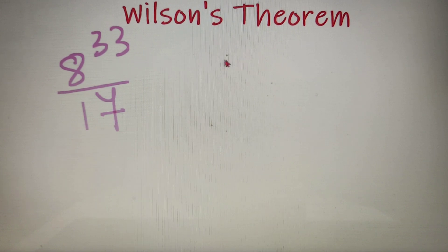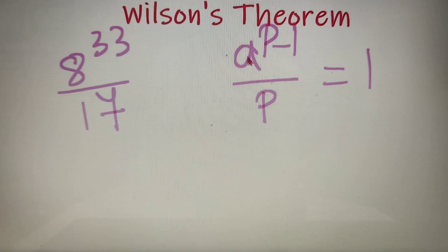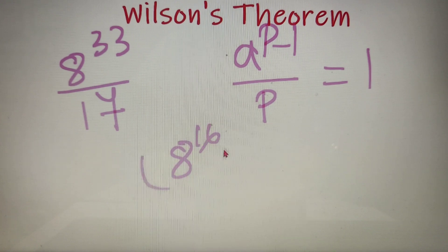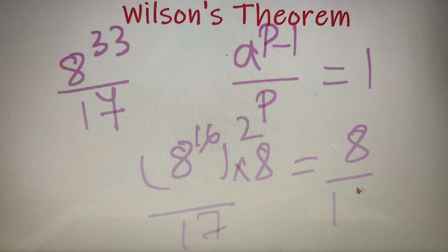We apply Fermat's Little Theorem, which states that when a to the power (p-1) is divided by p, the remainder is 1, provided p is prime and a and p are co-prime. So I rewrite 8 to the power 33 as (8 to the power 16) squared divided by 17, times 8. By Fermat's Little Theorem, the first part gives remainder 1, so we are left with 8 divided by 17, giving a final answer of 8.